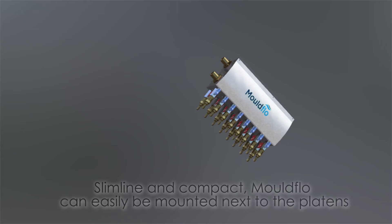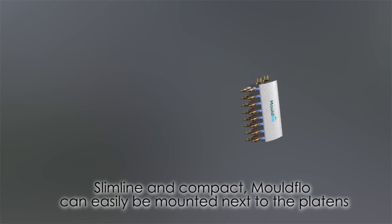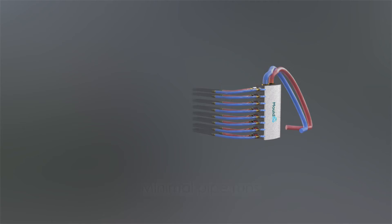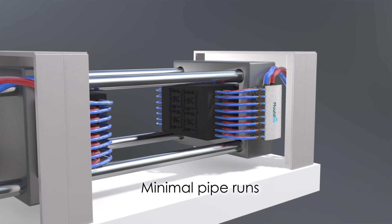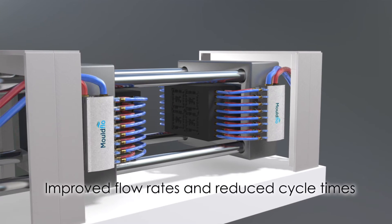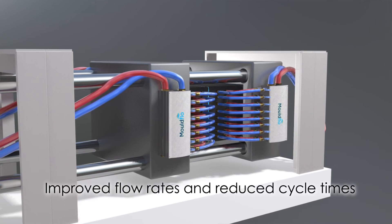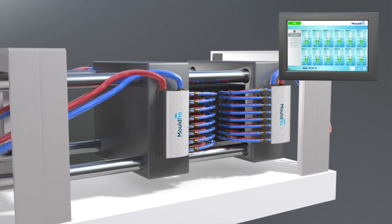The compact design enables Mold Flow to be mounted next to the machine, keeping the pipe runs to a minimum, improving flow rates and reducing cycle times. The remote mounted interface allows easy monitoring from a convenient location.